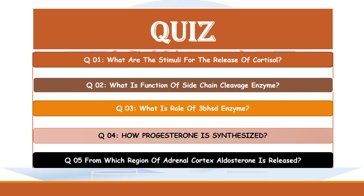Now here are some simple basic questions from today's lecture: (1) What are the basic stimuli for the release of cortisol? (2) What is the function of the side chain cleavage enzyme? (3) What is the role of 3-beta-hydroxysteroid dehydrogenase enzyme? (4) How is progesterone synthesized? (5) From which region of the adrenal cortex is aldosterone released? You can evaluate yourself by posting your answers in the comment section. Thank you so much, God bless you all.